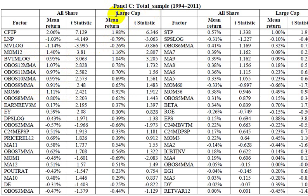The authors then compared results when restricting the sample to large cap companies only. In essentially all cases, making the sample large cap mutes the effect of these factors. Cash flow to price, size factors, and momentum factors all show decreased return differences and lower T-statistics, to the point where many become insignificant — the return difference may not be statistically different from zero for large cap stocks alone.